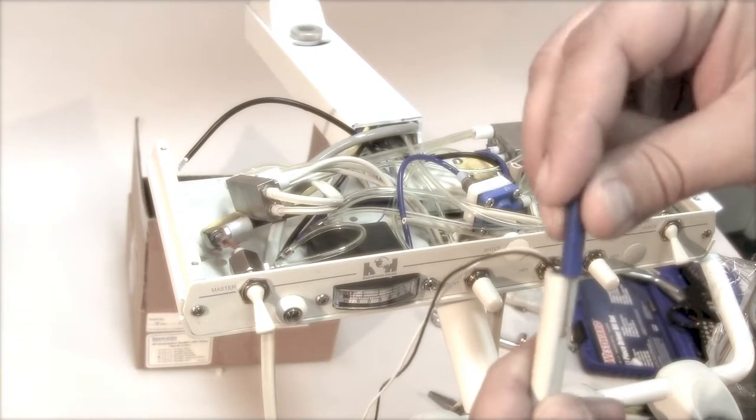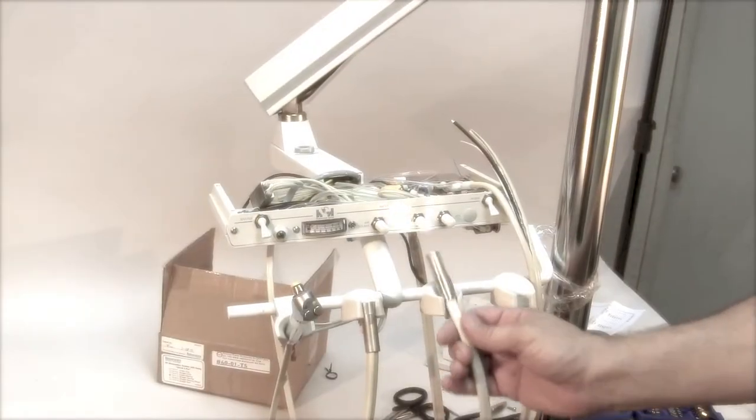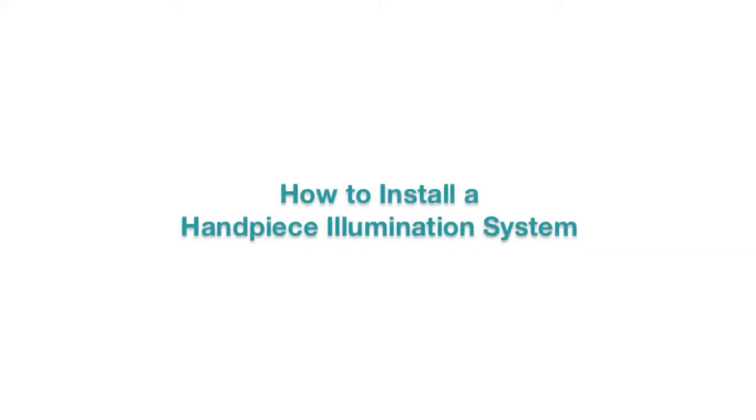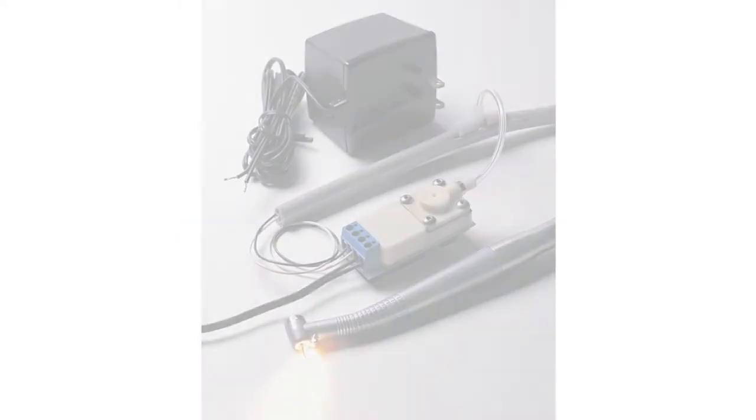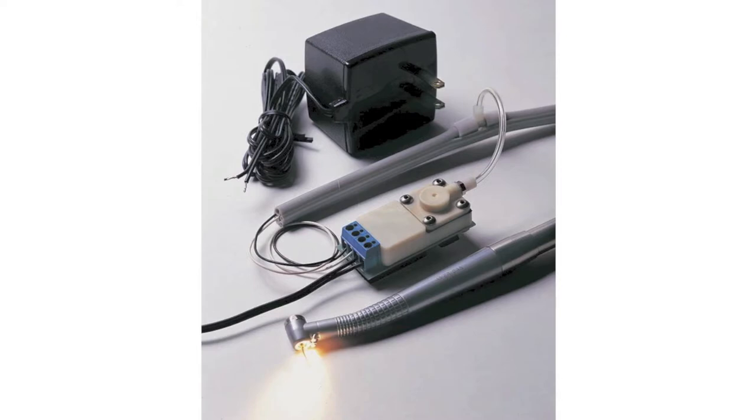Adding a bulb style handpiece illumination system to your delivery unit is such an easy affair that we'd like to demonstrate it for you. American Dental offers an economical bulb style handpiece illumination system that includes a transformer, air electric control, and tubing with bulb socket and connector that anyone can install.